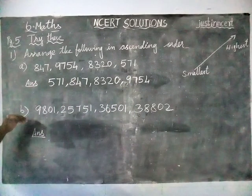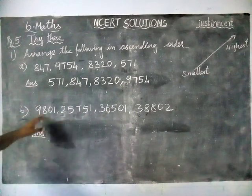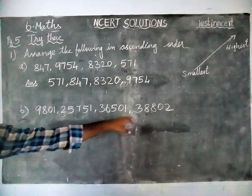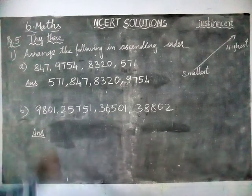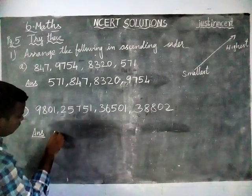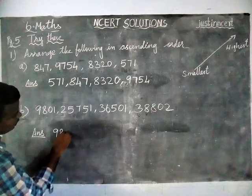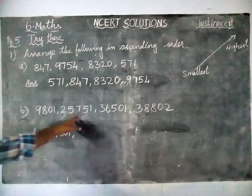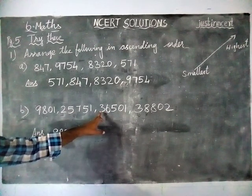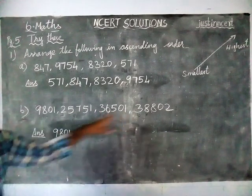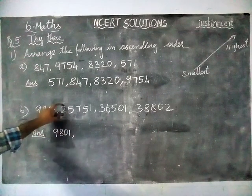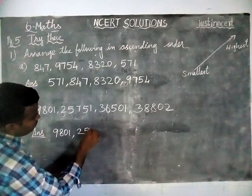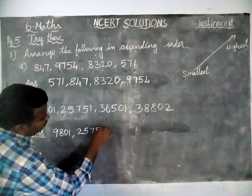Now, next option B. Here they have 4 numbers; in these 4, only 1 is a 4-digit number, and the remaining 3 are also 5-digit numbers. So, the 4-digit number is the smallest number — 9801. Next, we have three 5-digit numbers. In these, this number is starting with 3, 3, and this one is starting with 2. So this is the smallest number — 25751.